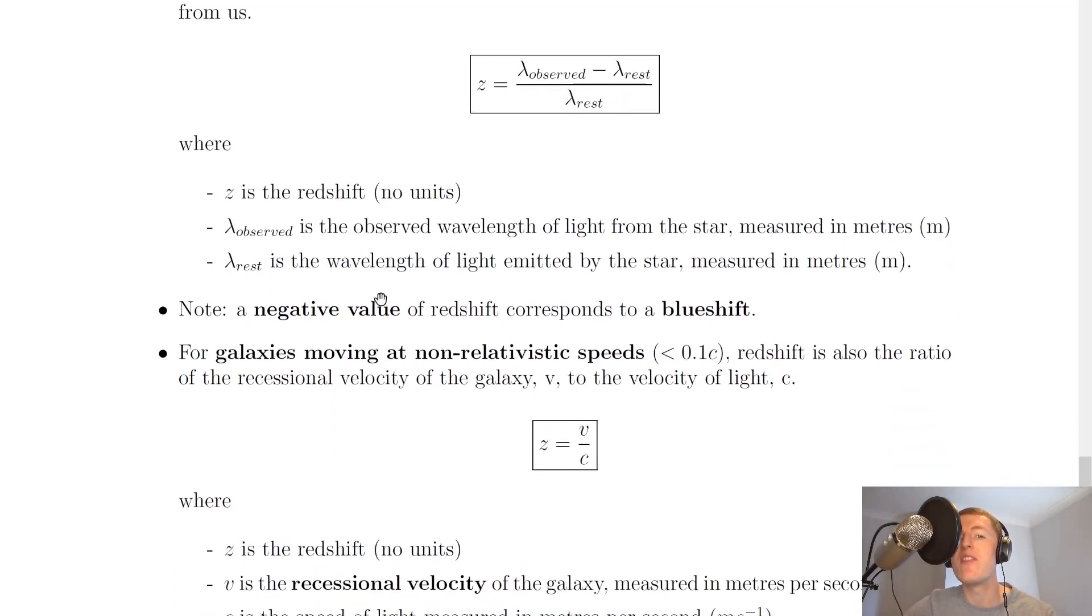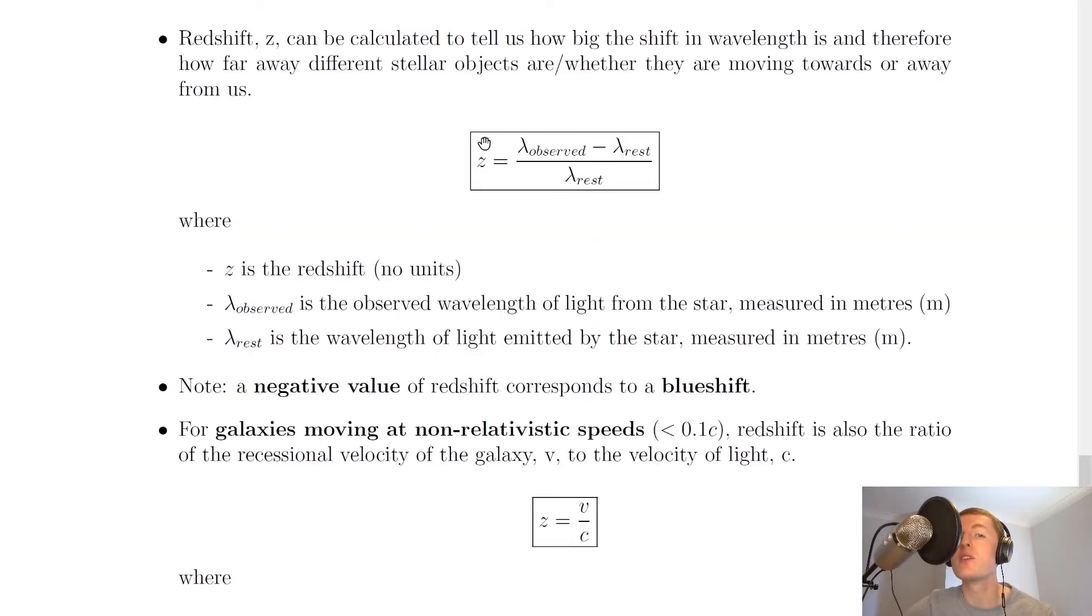Note that a negative value of redshift corresponds to a blueshift. So if we get a positive value of z here, then that means that the galaxy or star is moving away from us, and if we get a negative value of z, that means the galaxy or star is moving towards us.